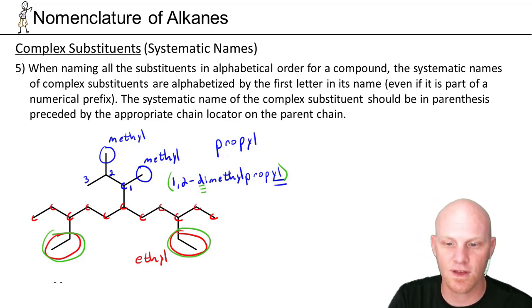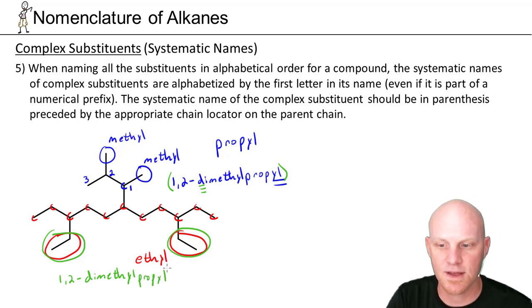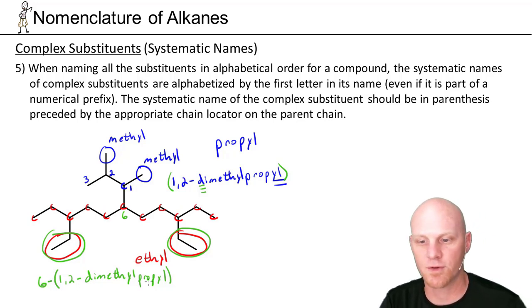And so the first thing we're going to say is 1, 2 dash dimethyl propyl. And as a complex substituent, it goes in parentheses. And the reason we do that is there's just numbers all over the place here. We can see that this is attached to carbon number 6 in the main chain. So we're going to designate then 6, 1, 2 dimethyl propyl.